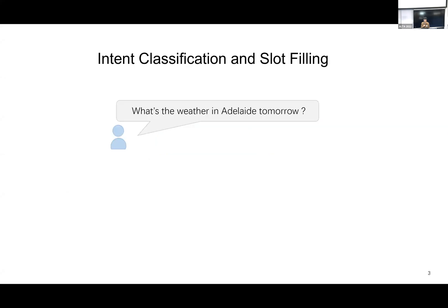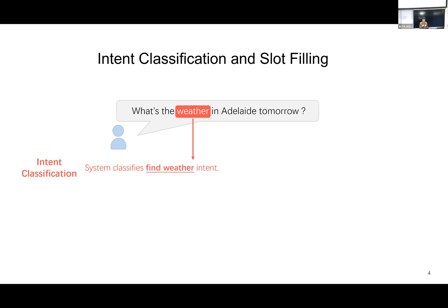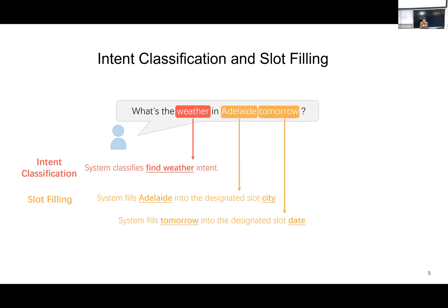Let me give you an example. When you ask the dialogue system 'what's the weather in Adelaide tomorrow?', the first thing the dialogue system needs to do is identify the intent of the utterance. Here the intent is to check the weather, and based on this intent the system needs to do the slot filling task — finding the city, which is Adelaide, and the date, which is tomorrow.